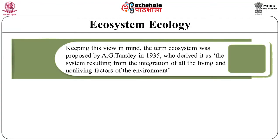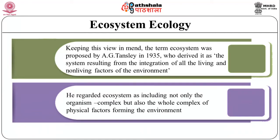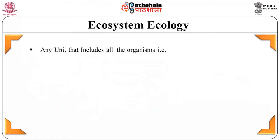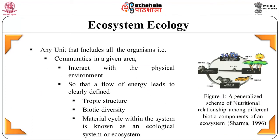Keeping this view in mind, the term ecosystem was proposed by A.G. Tansley in 1935, who derived it as a system resulting from the integration of all the living and non-living factors of the environment. He regarded the ecosystem as including not only the organism complex but also the whole complex of physical factors forming the environment. The idea of ecosystem is by no means so recent, as allusions to the unity of organisms and environment can be traced back to the late 1800s. Any unit that includes all the organisms, the communities, in a given area interacting with the physical environment so that the flow of energy leads to clearly defined trophic structures, biotic diversity and material cycles — meaning an exchange of material between living and non-living components — is known as the ecological system or ecosystem.